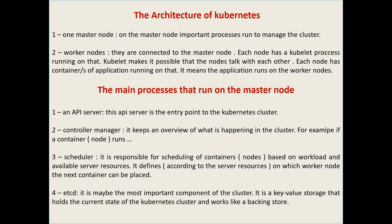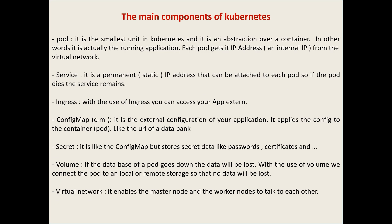The scheduler defines, according to the server resources, on which worker node the next container can be placed. The last one is etcd. etcd is maybe the most important process running on the master node — it is a key-value storage that holds the current state of the Kubernetes cluster and works like a backing store for backup and restore. These four are the main processes that run on the master node.